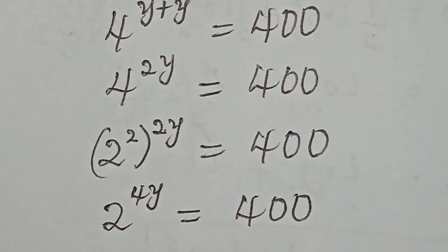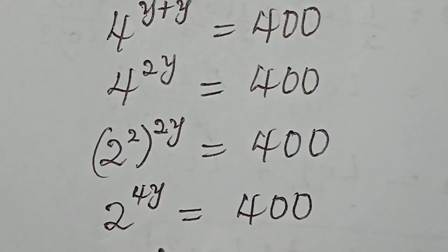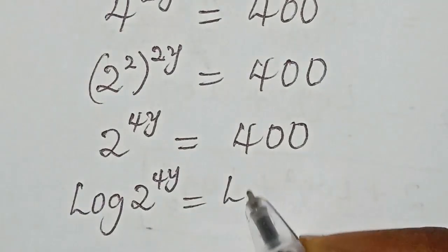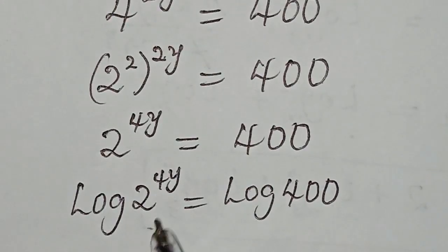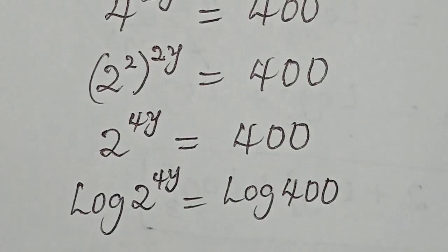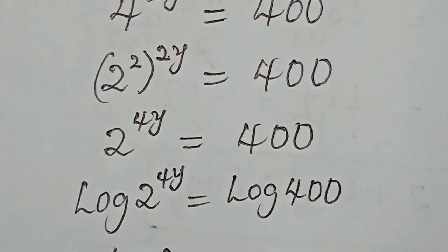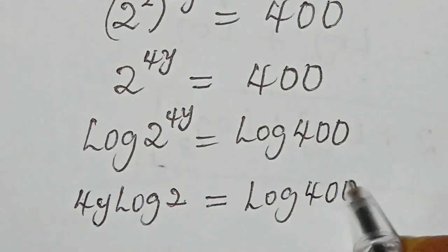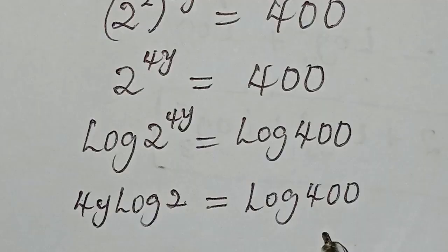Let's consider taking the log of both sides. So we try to bring down the exponent to the base from the left-hand side. Then over here we divide both sides by log 2.